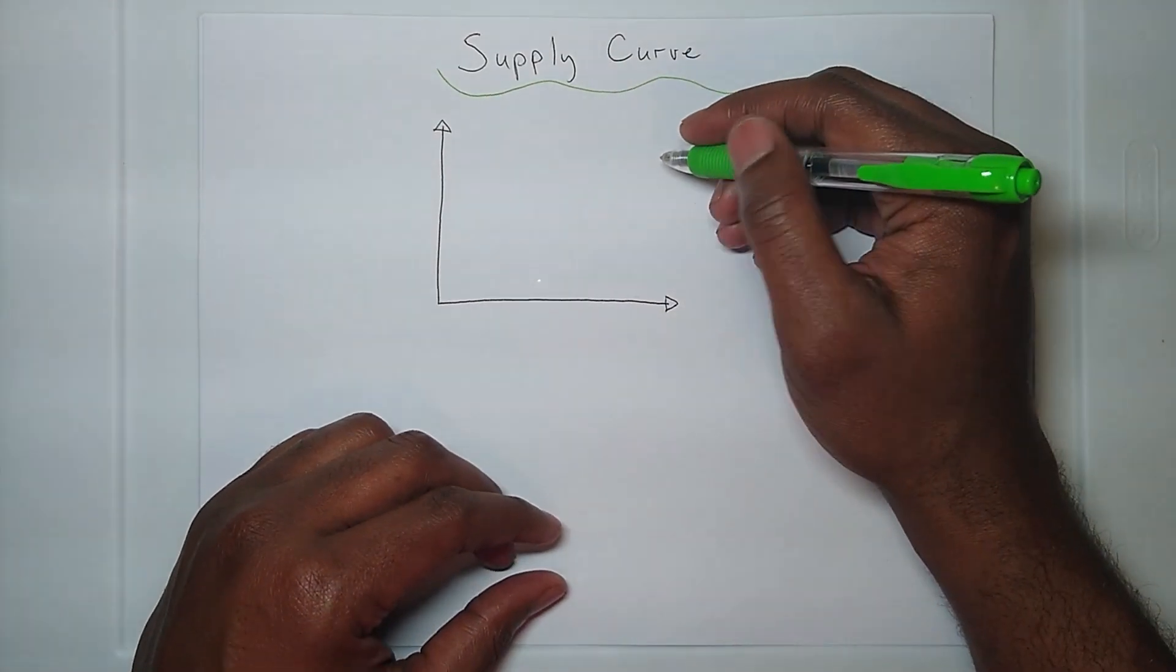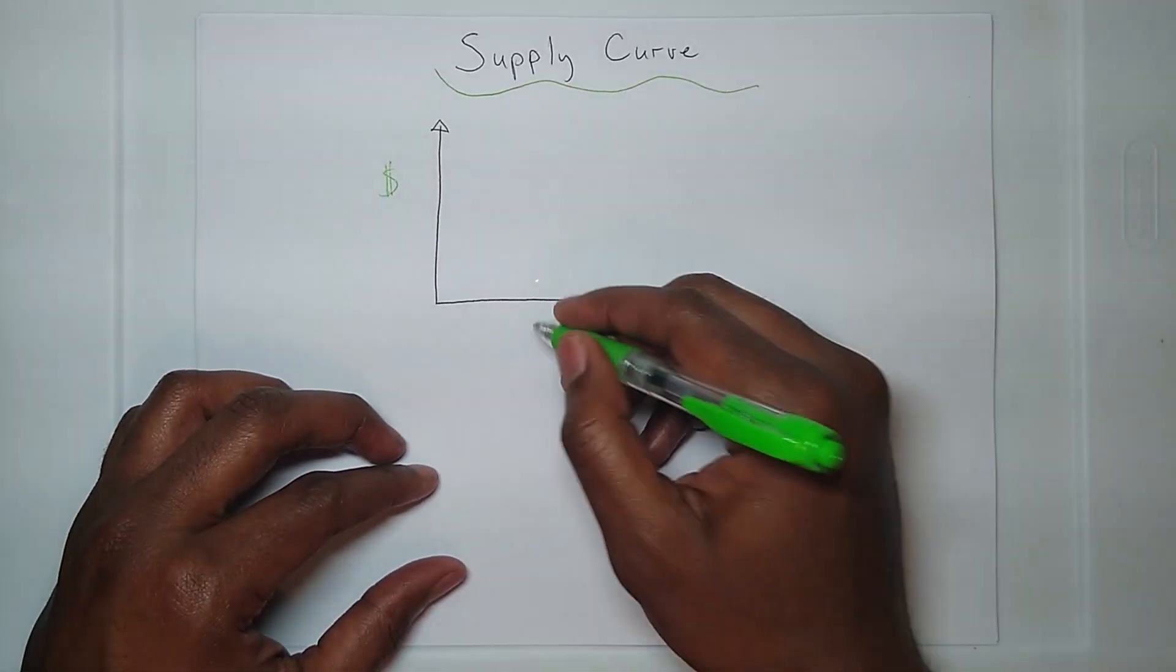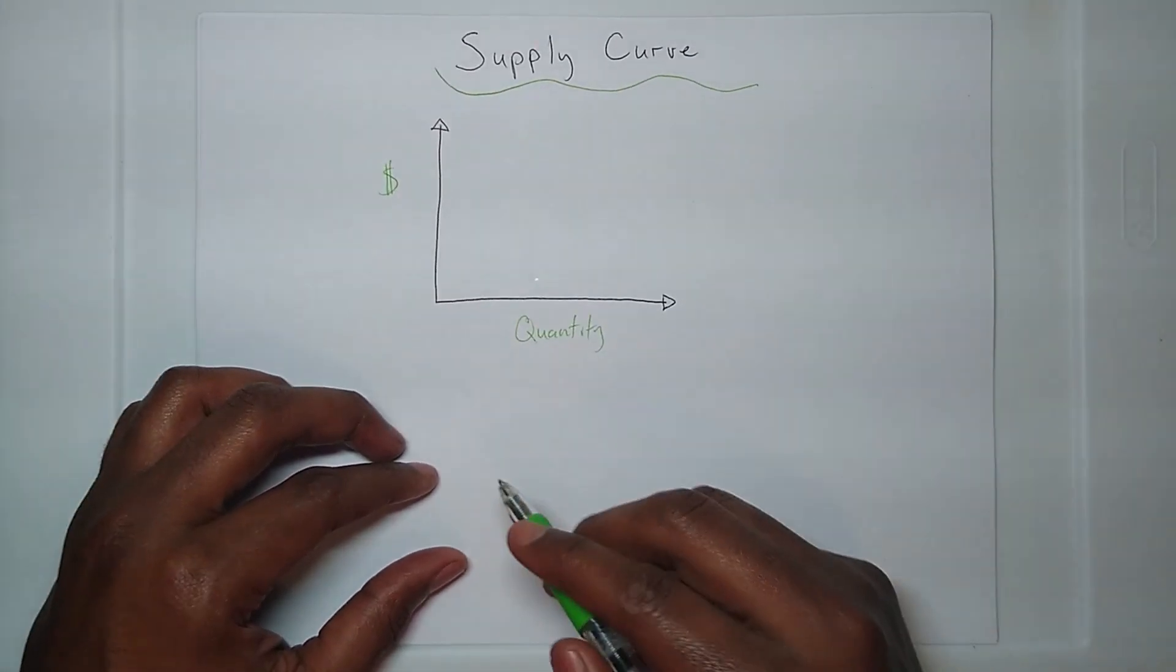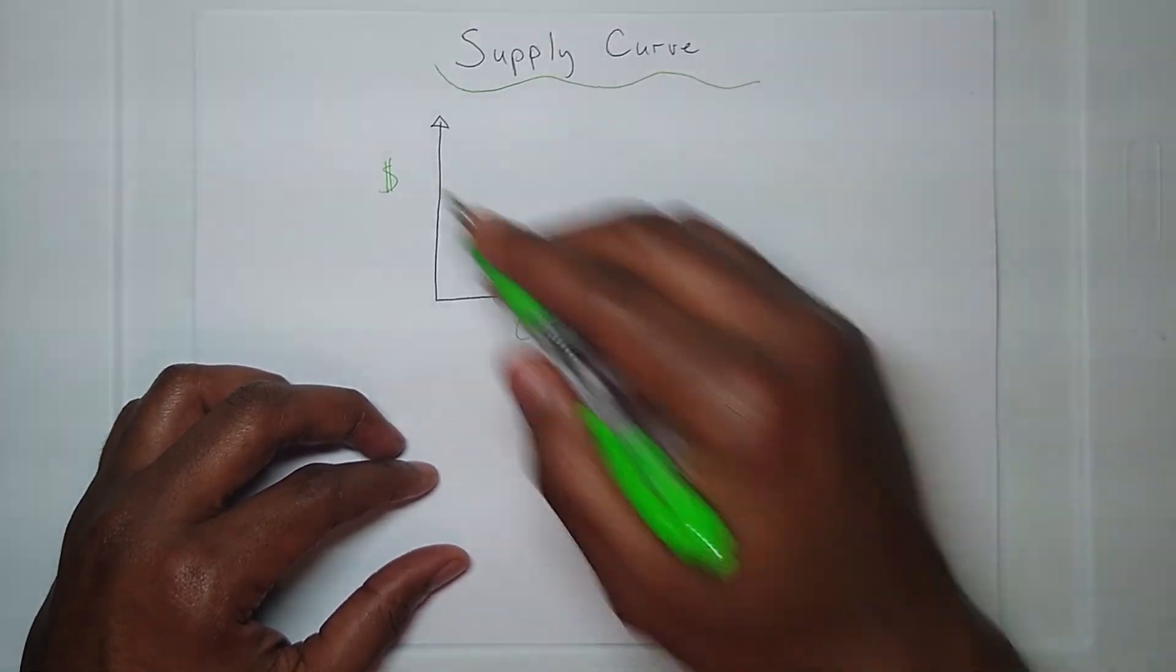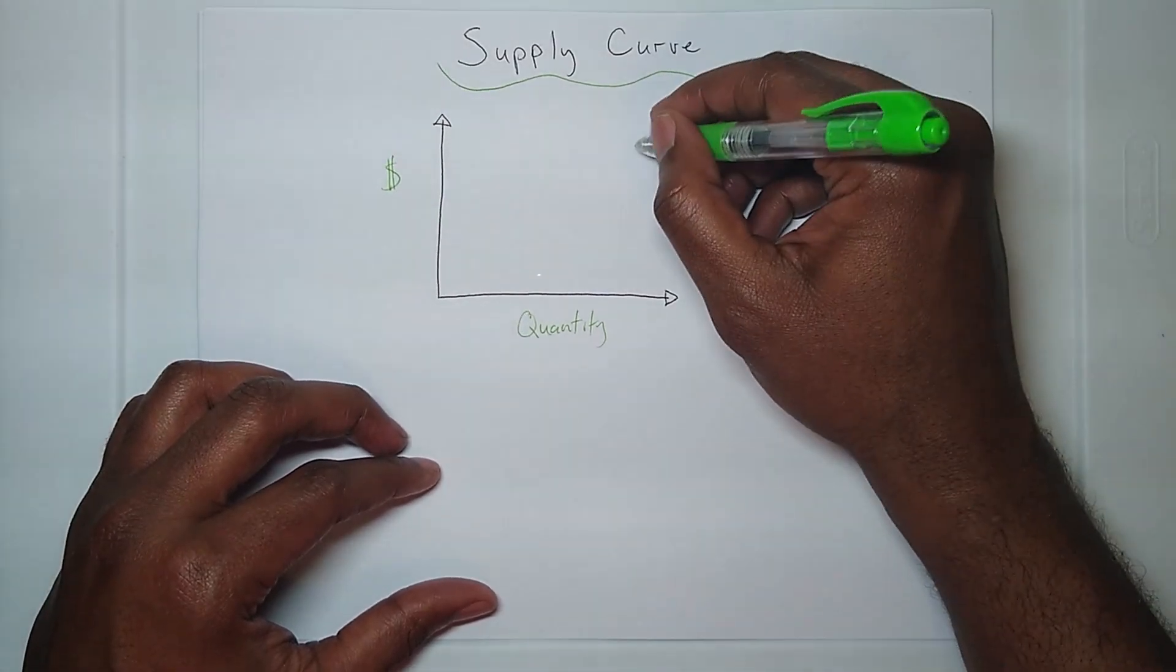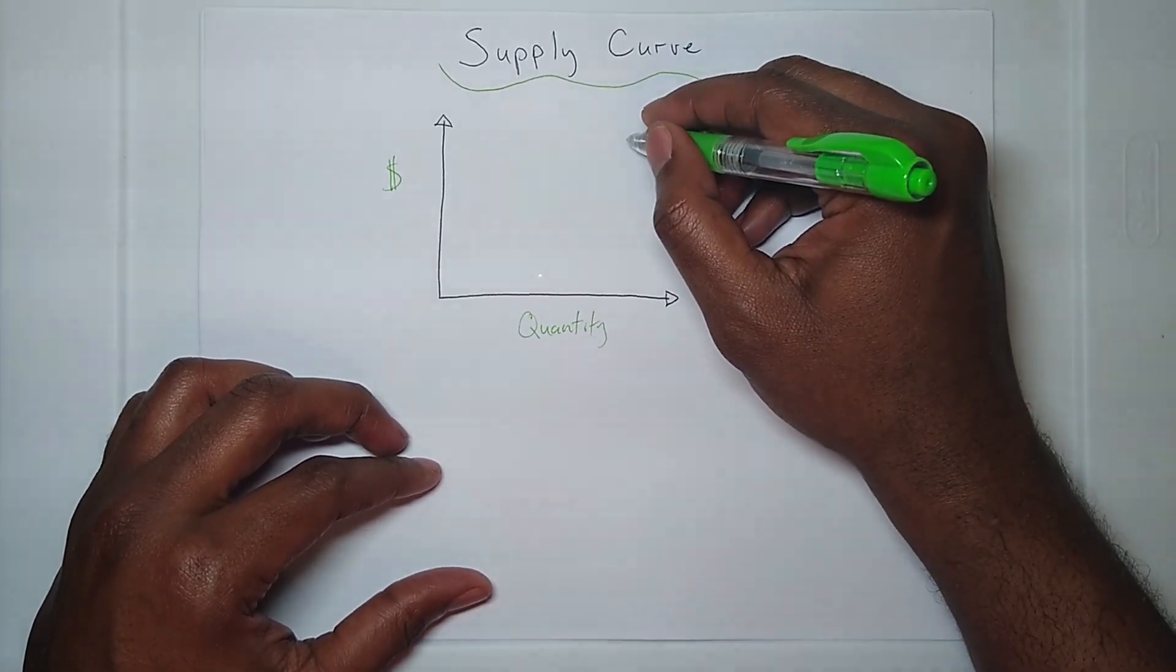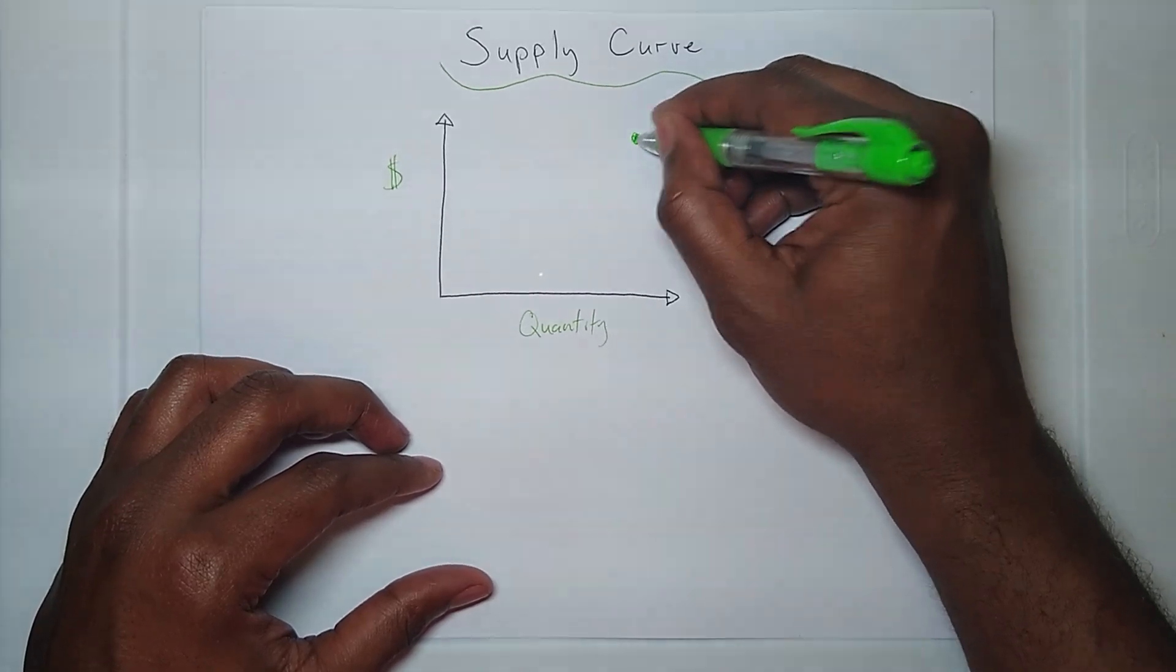Looking at the supply curve, it has the same relationship between the cost of supplying that service and the quantity of that service, but it has a different relationship. Instead of it being inverse, it's a direct relationship between these two on the positive side. If the provider could make a lot of money from supplying a lot of quantity, they would definitely do it.